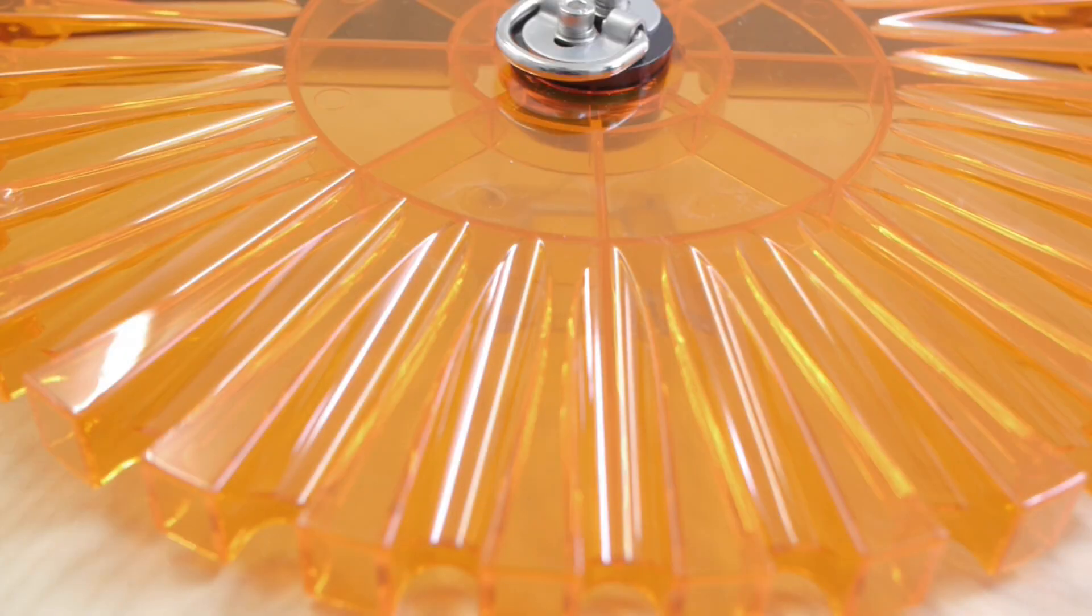Back to the Sorting Disc. This disc is made to sort brass for 380 Auto, 9mm Luger, 40 S&W and 45 ACP with one disc. This is very special but that's not enough.